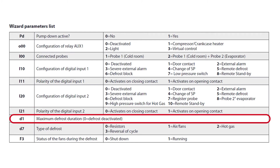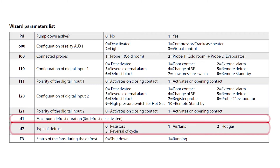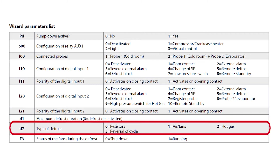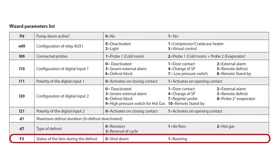D1 tells us that for program 3, the maximum defrost time is 20 minutes, and this is the default value. D7 is the type of defrost — 0 tells us it is electric resistance. Finally, F3 is 0, which means the fans will be powered off during defrost.